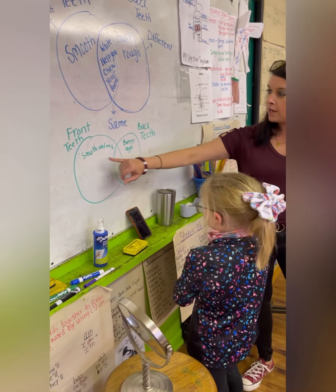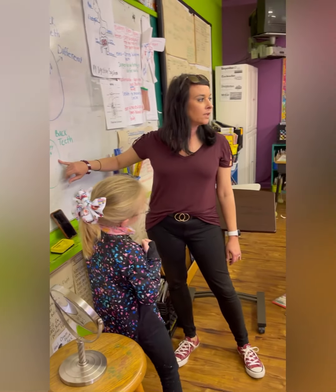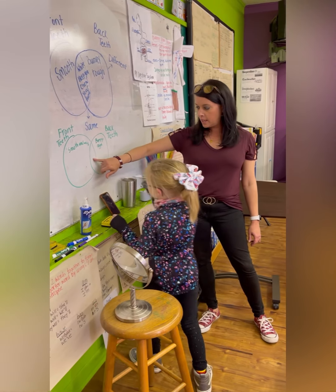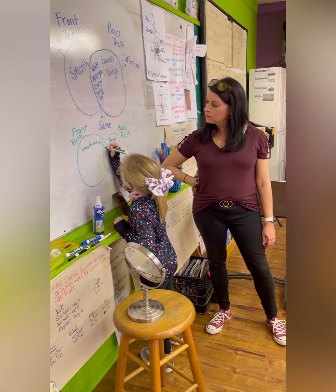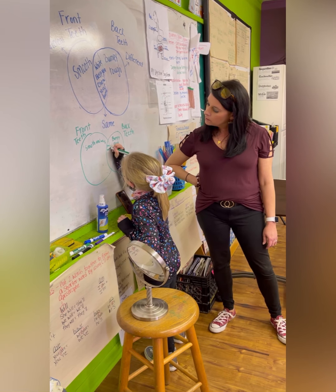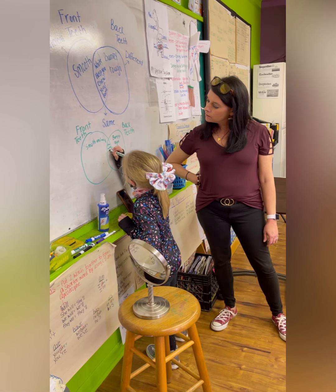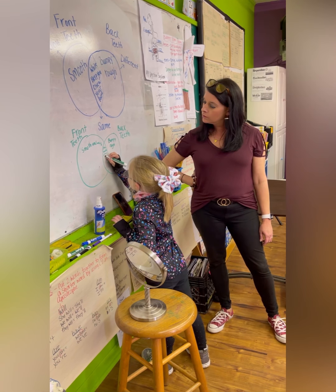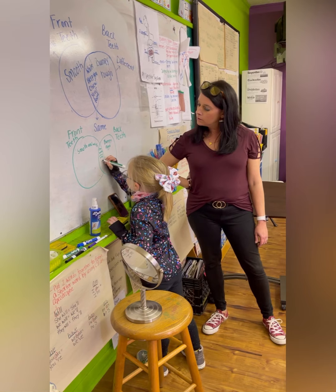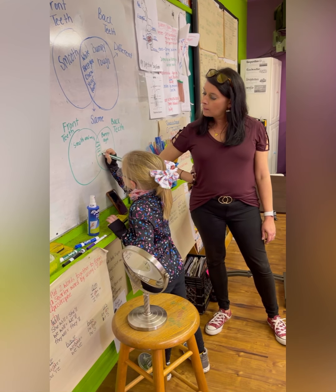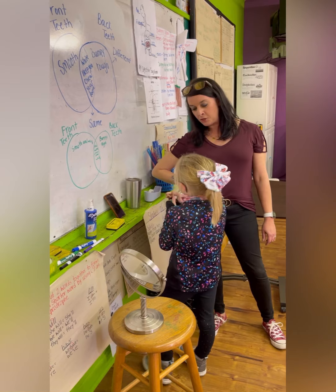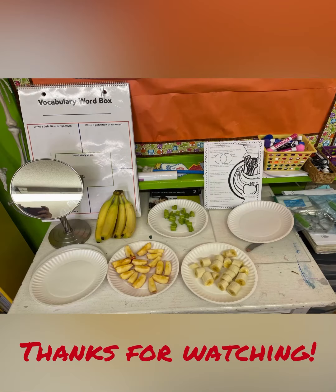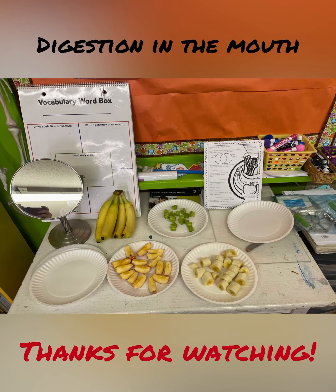Now, this tells us how our front and back teeth are different, right? We're comparing them. Now tell me a way they're alike — how they're the same. They both chew and they're both white. So they both chew your food and they're both white. Very, very good — comparing and contrasting.